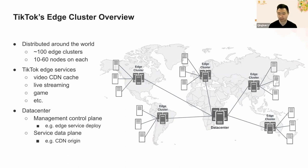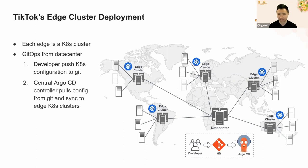The data center functions as both the management control plane as well as the service data plane for those edge clusters and edge services. For example, we have Argo CD running in the data center to deploy edge services to those edge clusters. Each edge cluster is a standalone Kubernetes cluster. They talk to the data center where we have Argo CD and the Git repo to manage deployment for edge services using GitHub. Our developers push their Kubernetes configuration to the Git repository, and the central Argo CD controller pulls those configurations to sync and deploy them to the specified edge cluster.